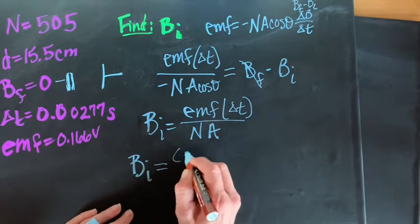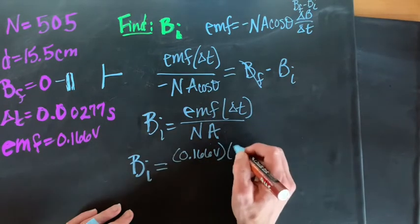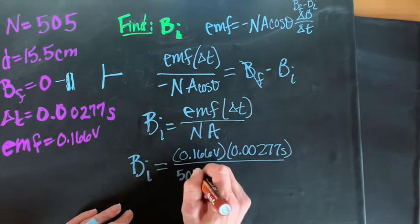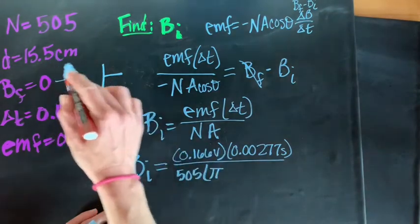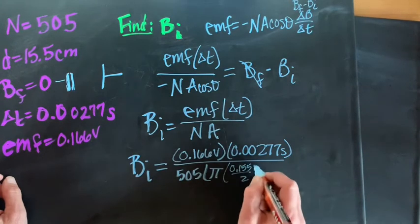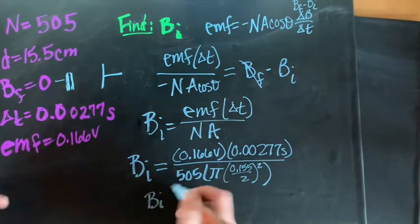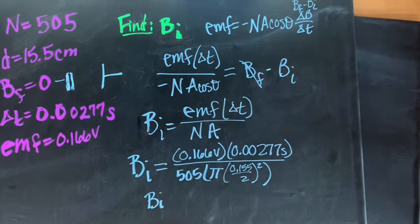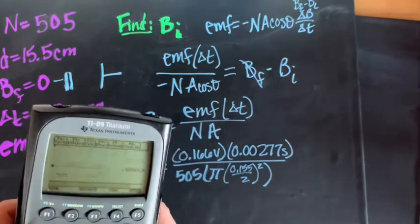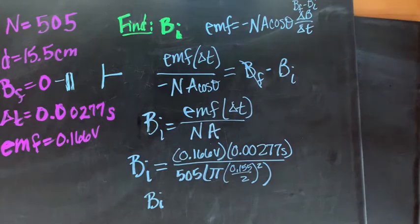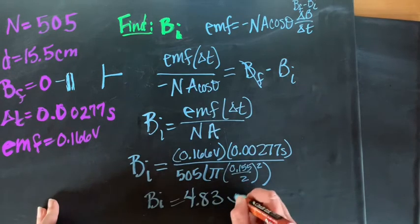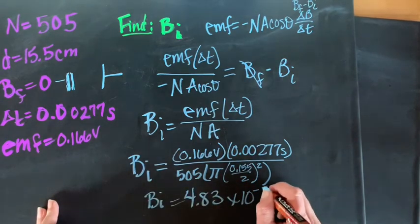So if we put our values in, we end up with 0.166 volts times 0.00277 seconds divided by 505 times pi. We need to make sure this is always in meters R squared, so 0.155 over 2 squared. This gives us a value if we put everything in of 4.83 times 10 to the negative 5 Tesla.